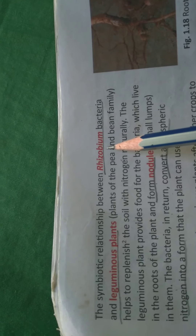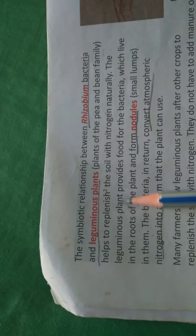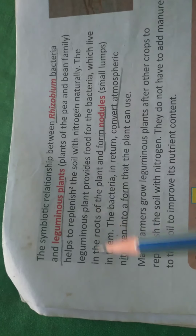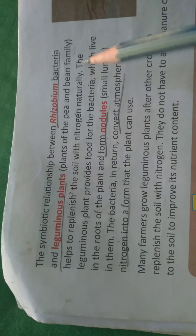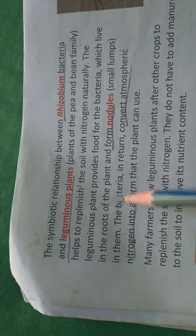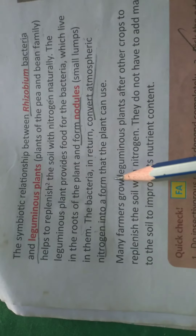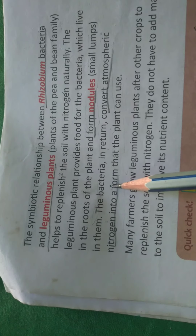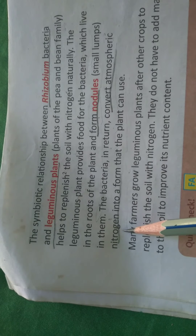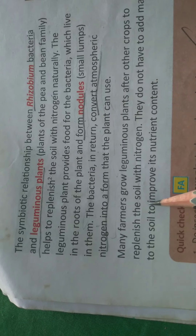The leguminous plants provide food to bacteria which sleep in the roots of the plant and form nodules — small lumps in them. The bacteria in return convert atmospheric nitrogen into a form that the plant can use. Many farmers grow leguminous plants after other crops to replenish the soil with nitrogen.